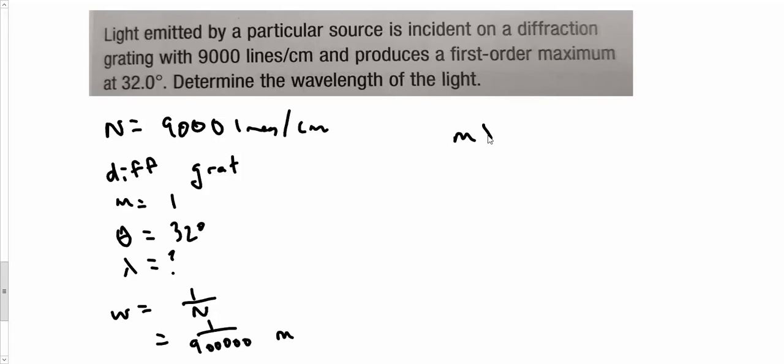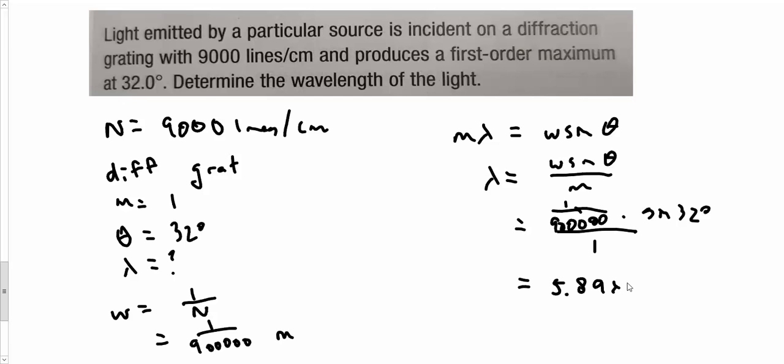m lambda is w sine theta. I'm looking for lambda equals w sine theta over m. m is 1, that works out nicely. I get 1 over 900,000 times the sine of 32 degrees. Now, when I work this all out, I'm going to get 5.89 times 10 to the minus 7, which is 589 nanometers.